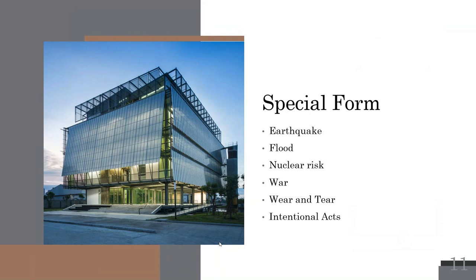The special form — anytime you see 'special,' 'open peril,' or 'all risk,' pay attention to exclusions. If it's not on the exclusion list, it's covered. Common exclusions include earthquake and flood, which you can buy back through the earthquake program or the National Flood Insurance Program. Nuclear risk and war or active war are not covered — they're catastrophic in nature. Nuclear risk can be purchased by larger businesses but is extremely expensive. Wear and tear and intentional acts are also excluded.